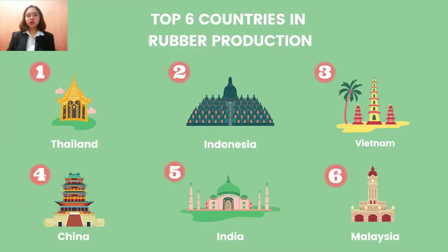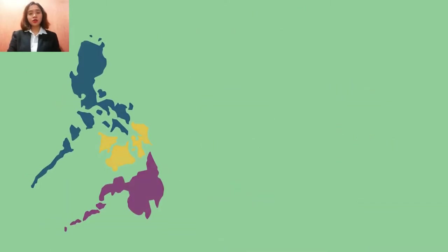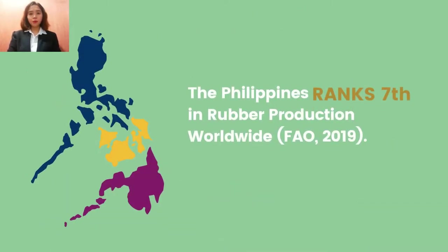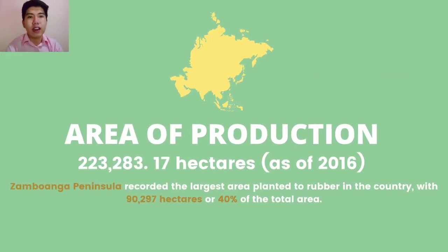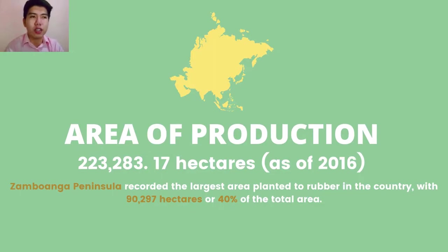The six leading countries in rubber production are Thailand, Indonesia, Vietnam, China, India, and Malaysia. The Philippines ranks 7th in rubber production worldwide. In terms of area of production, 223,283.17 hectares are designated for rubber production in the country. As of 2016, the Zamboanga Peninsula recorded the largest area planted to rubber, with 90,297 hectares or 40% of the total area.